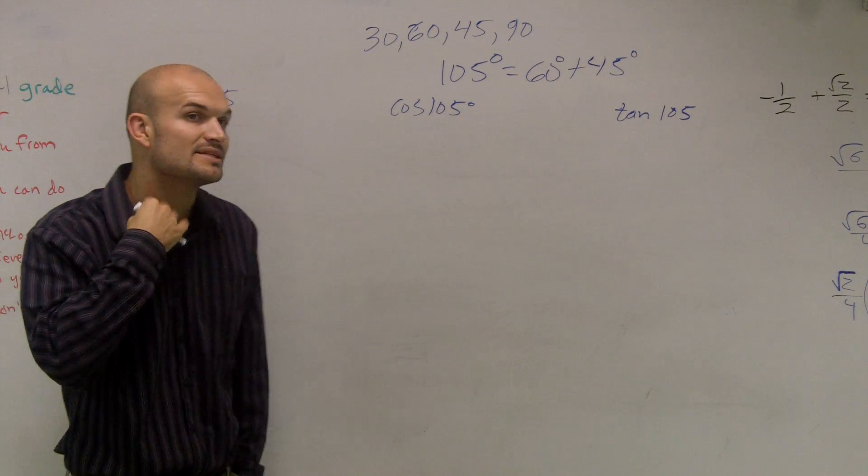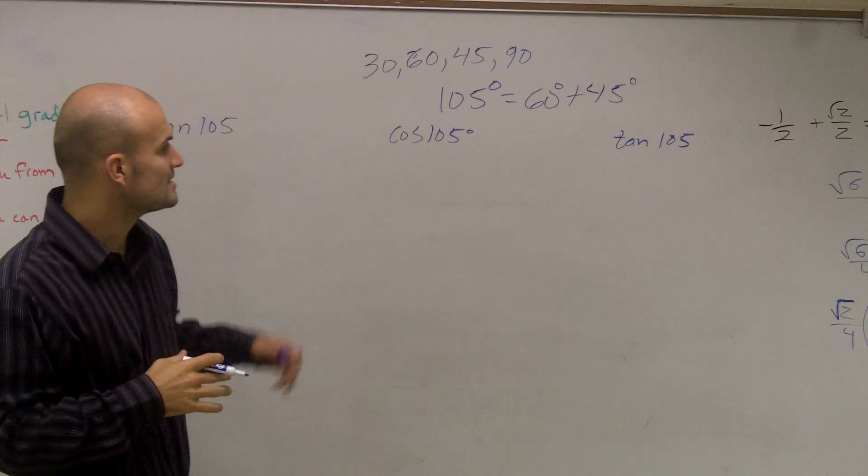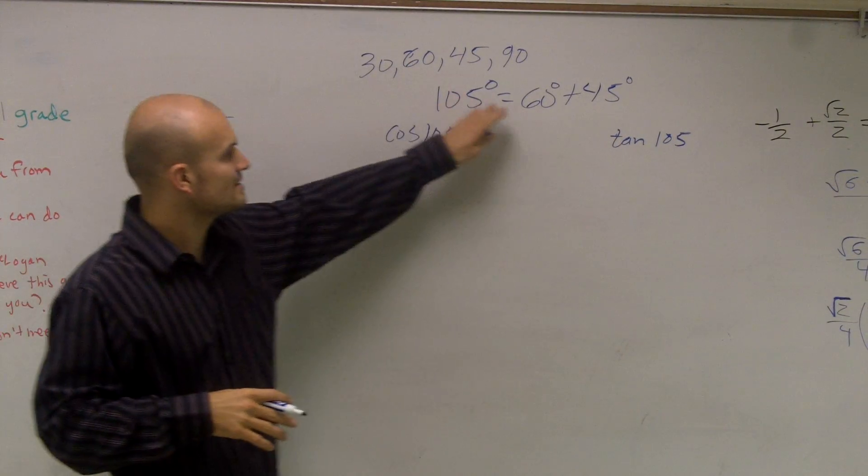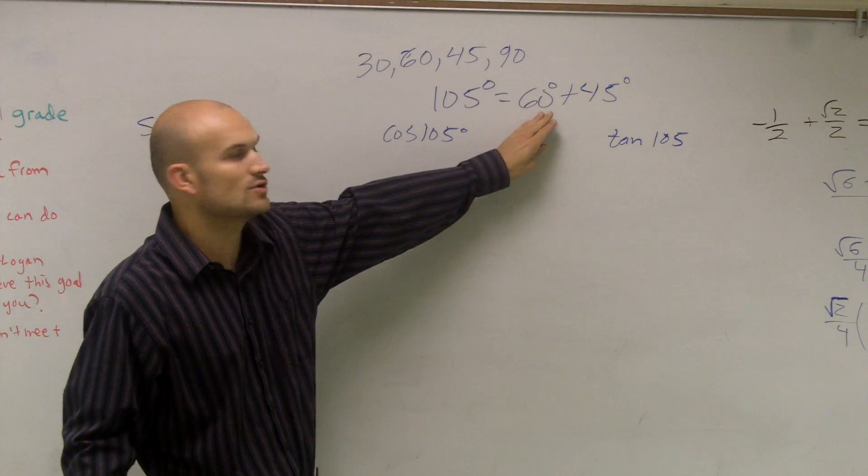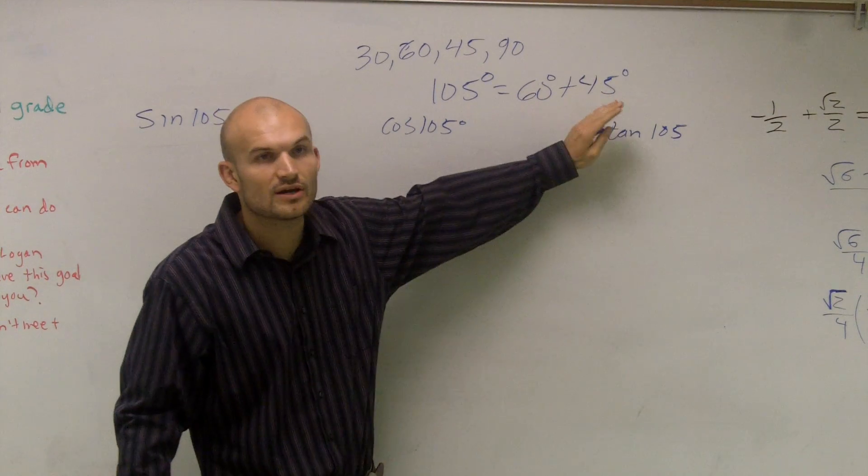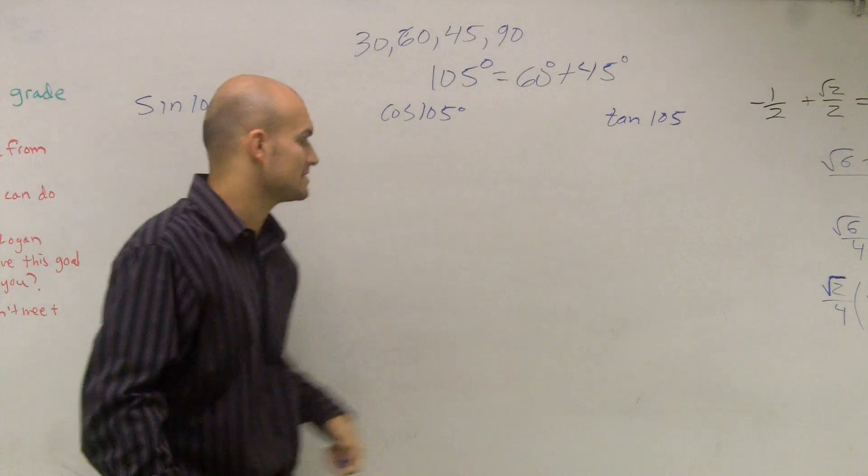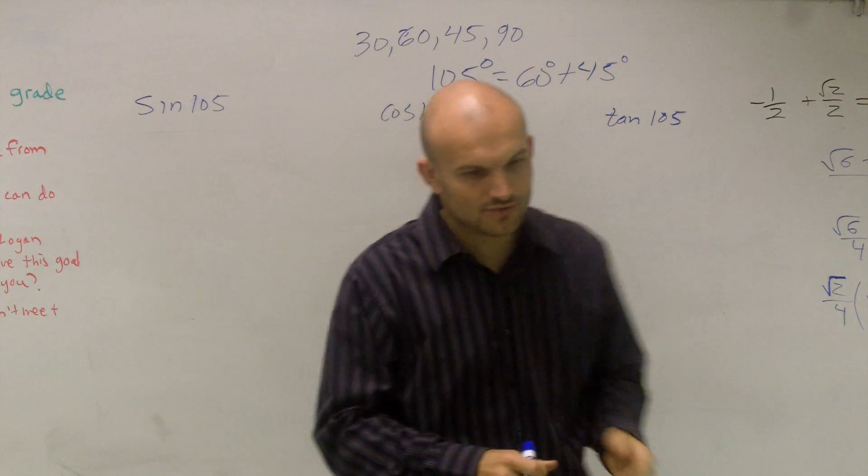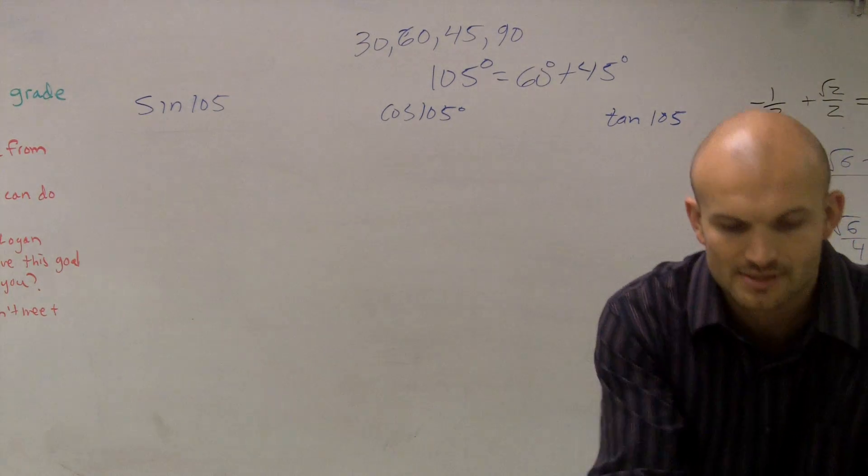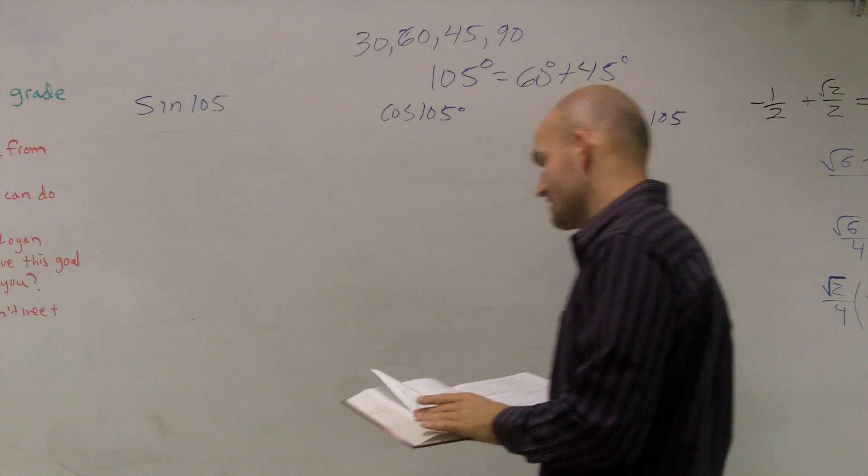So what's important about this is the sum and difference formula. What these do is these help us write this out, because we can figure out the sines and cosines of 60 degrees, and we can figure out the sine and cosine for 45 degrees. So the next thing I'm going to do is just write out the formulas for these difference angles.